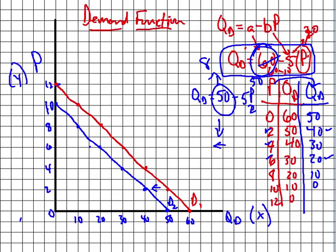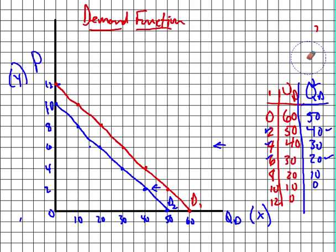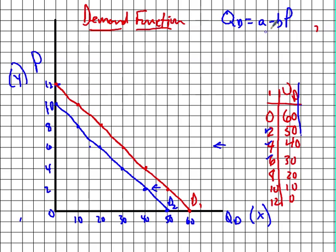The other thing we want to look at is what happens if the slope changes. The slope is B. So our original problem was 60 minus 5p. The question is: what happens if that 5 goes to 10? Is the line going to get steeper, or is it going to get flatter? Let's just work through it and see what happens.